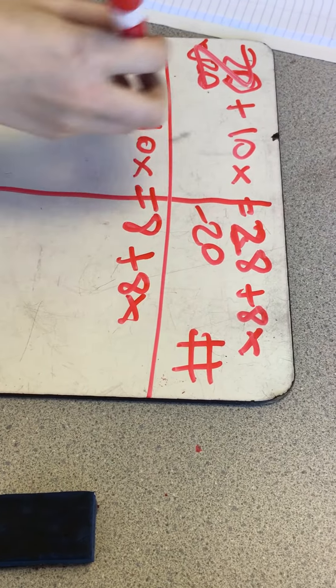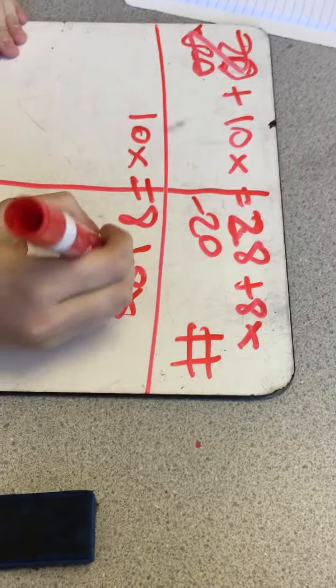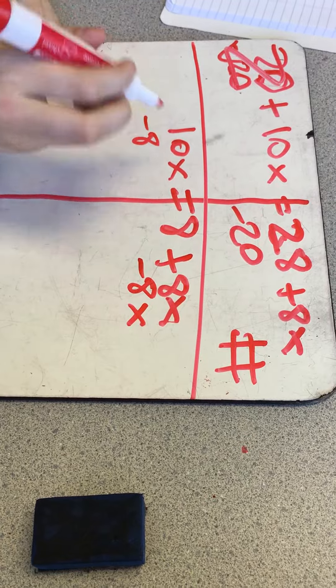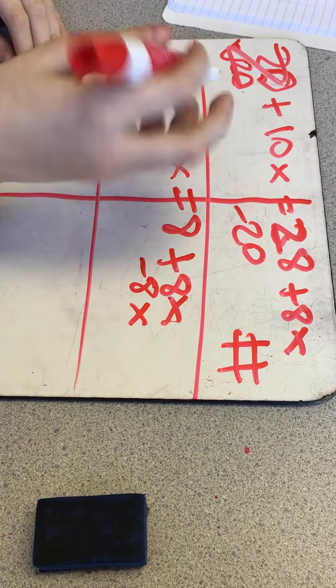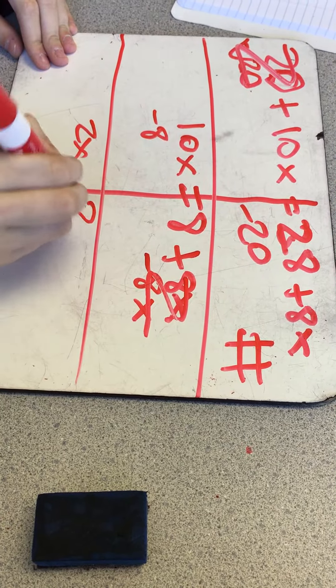And then you deal with the variable thing. You minus 8 from this side, that's what you do to one side, you do to the other, so you do that. And then you move everything down. So this is zero, and now this is 2x, and this is 8.